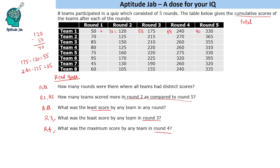What was the least score by any team in round 3? Round 3 scores are obtained by subtracting round 2 scores from round 3 cumulative totals: 215 minus 125 is 90, then 60, then 95, then 220 minus 160 is 60, then 55, then 60, and then 50. So the answer is 50.